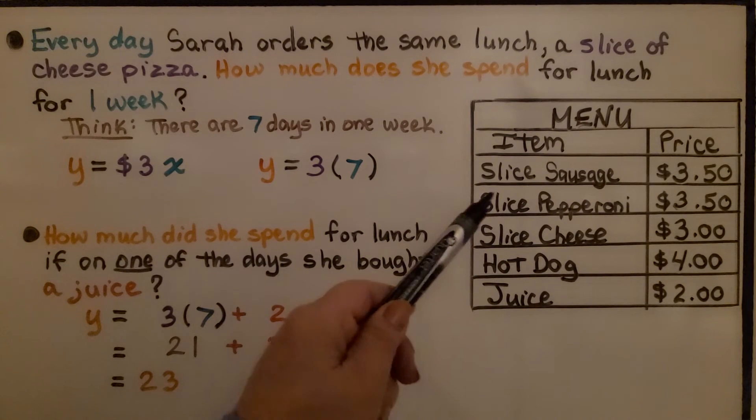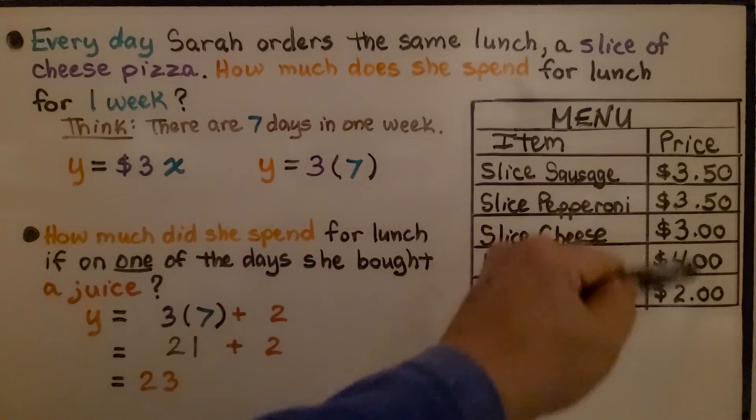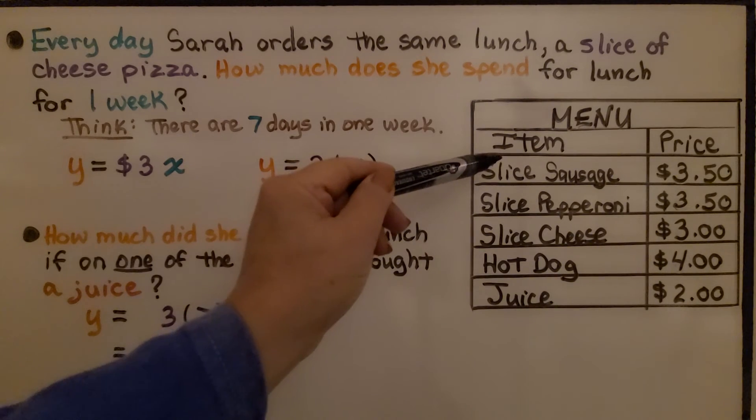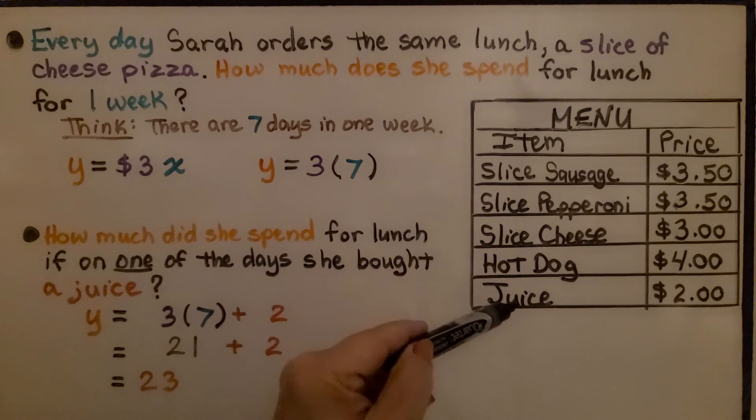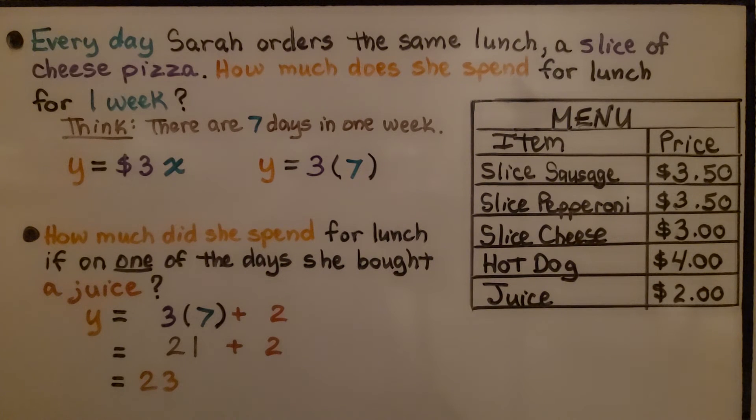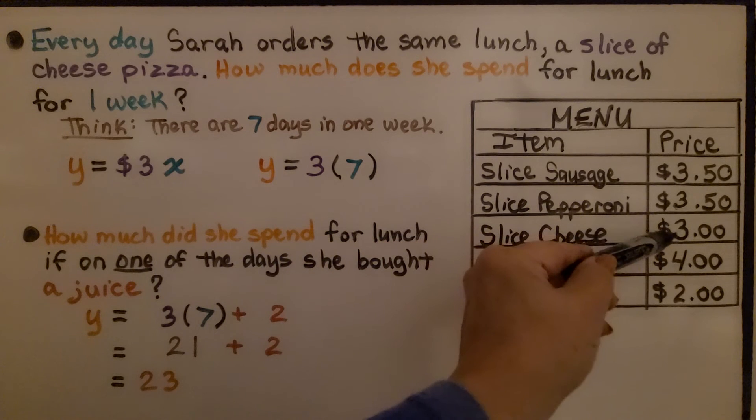So take a look at this. There's a menu with items and prices: a slice of sausage, pepperoni, cheese, a hot dog or a juice. Every day, Sarah orders the same lunch, a slice of cheese pizza. How much does she spend for lunch for one week? We think, well, there's seven days in one week. A slice of cheese pizza is $3.